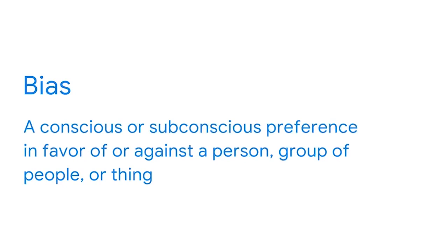Also, at this point in the process, an essential responsibility of every BI professional is to consider bias. Bias is a conscious or subconscious preference in favor or against a person, group of people, or thing. There are many different types of bias that can affect a data-related project, such as confirmation bias, data bias, interpretation bias, and observer bias. These concepts were taught in depth in the Google Data Analytics certificate, so please review them now if you need to.